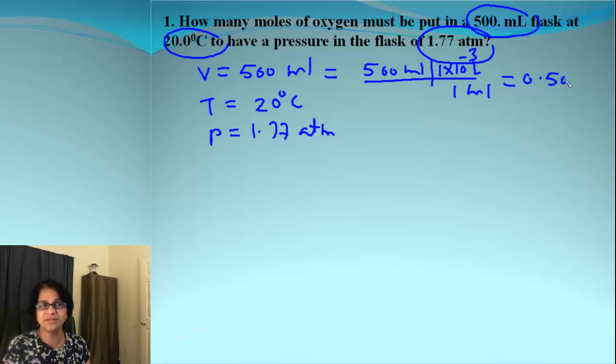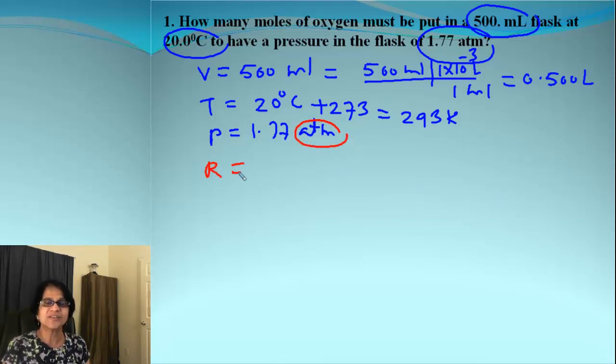Temperature must be in Kelvin. So let's add that 273 and that is 293 Kelvin. Now remember, the pressure units must match the units for R. So for atmosphere value which we have over here, the R value which we get is 0.0821.